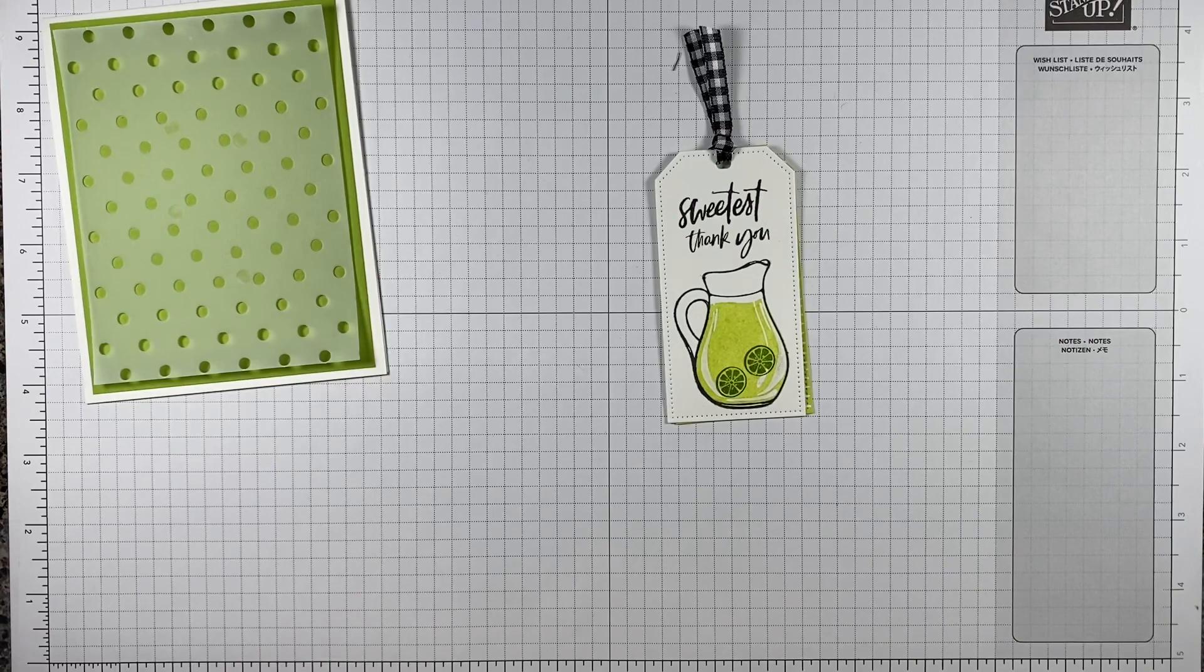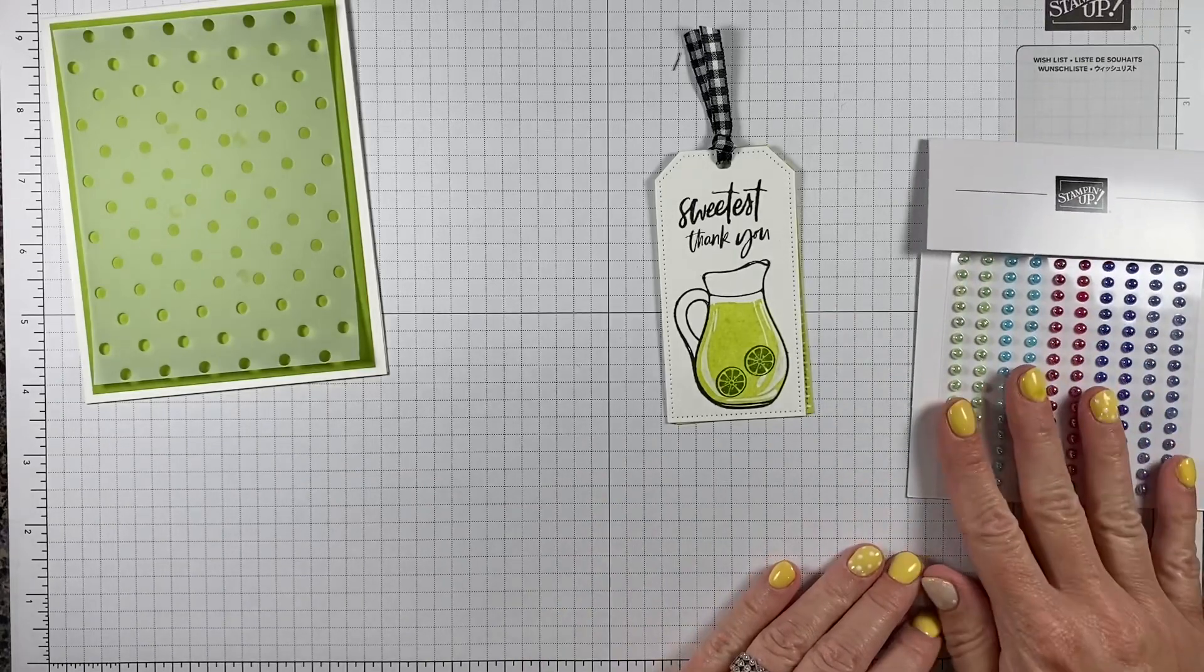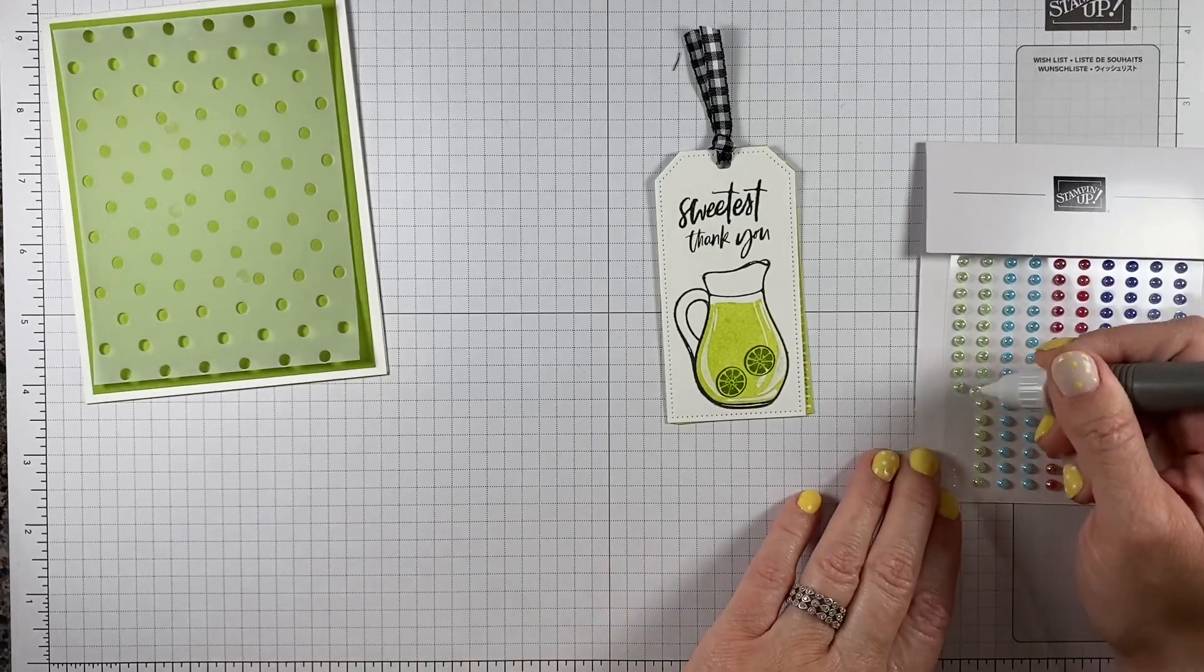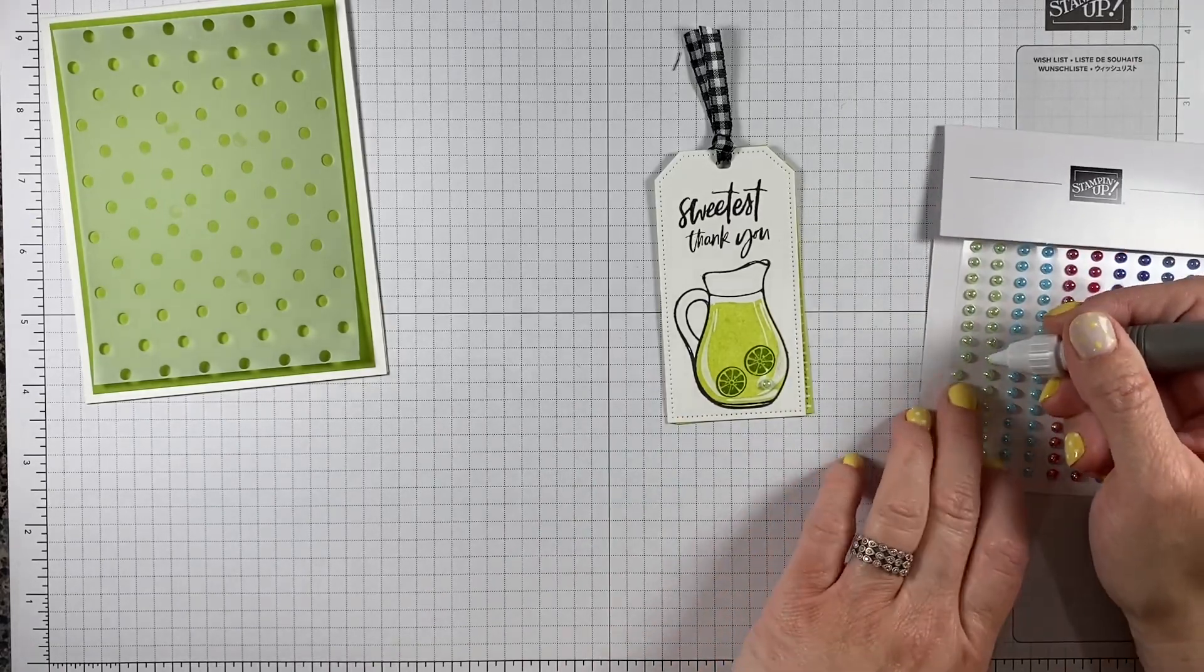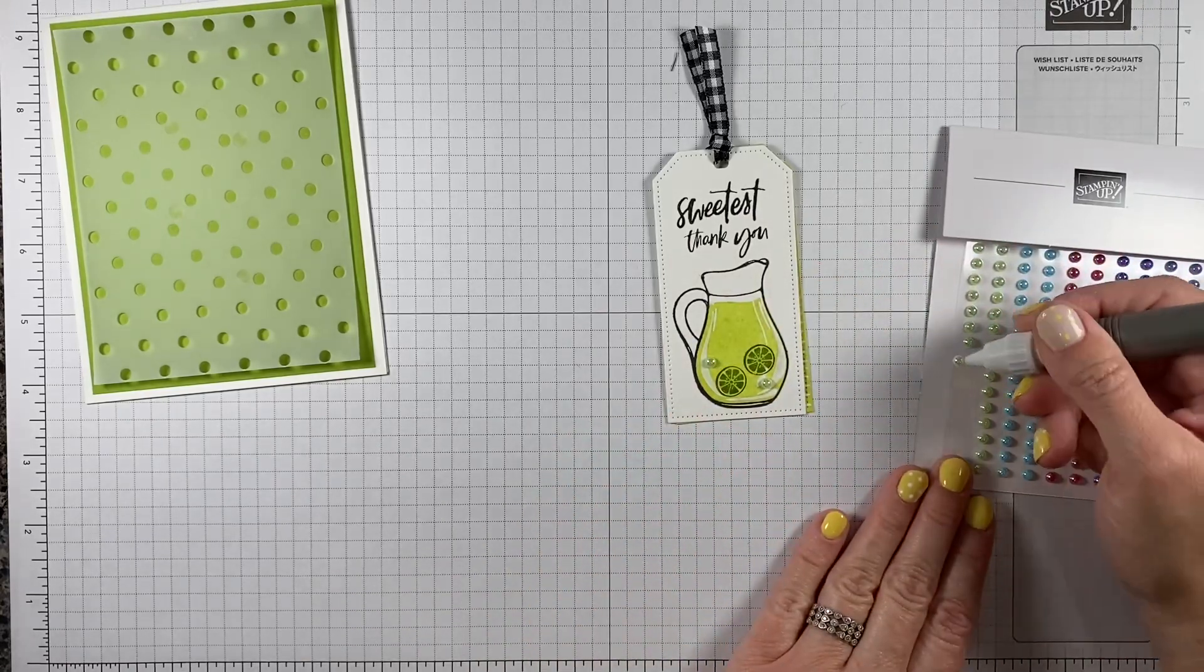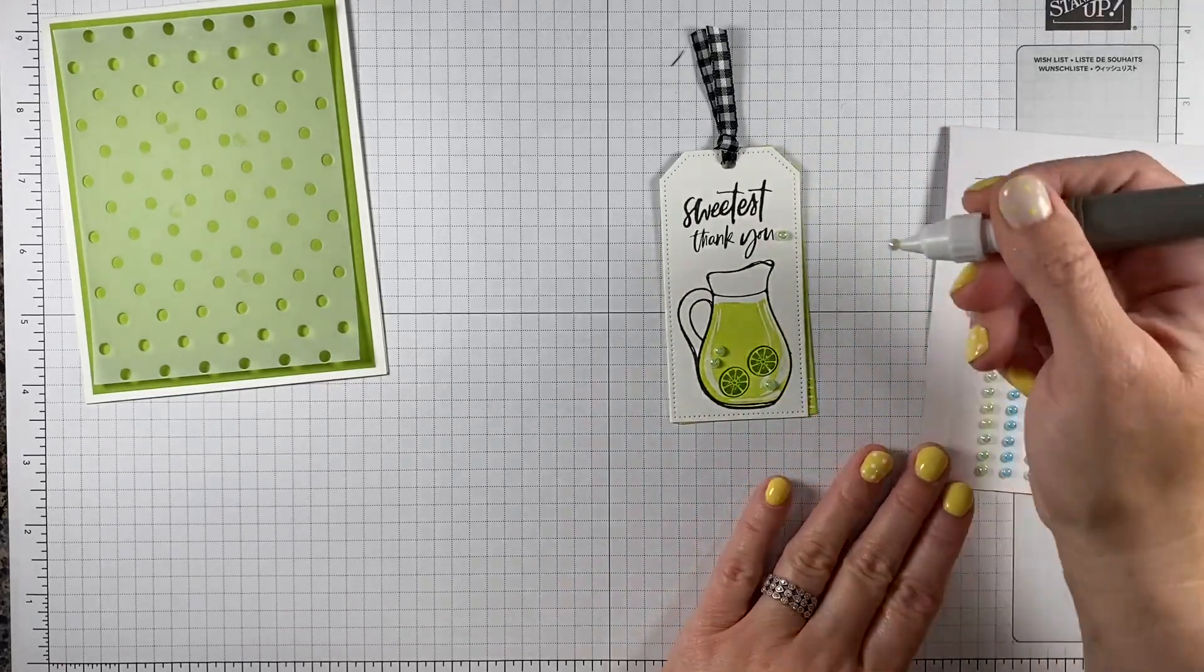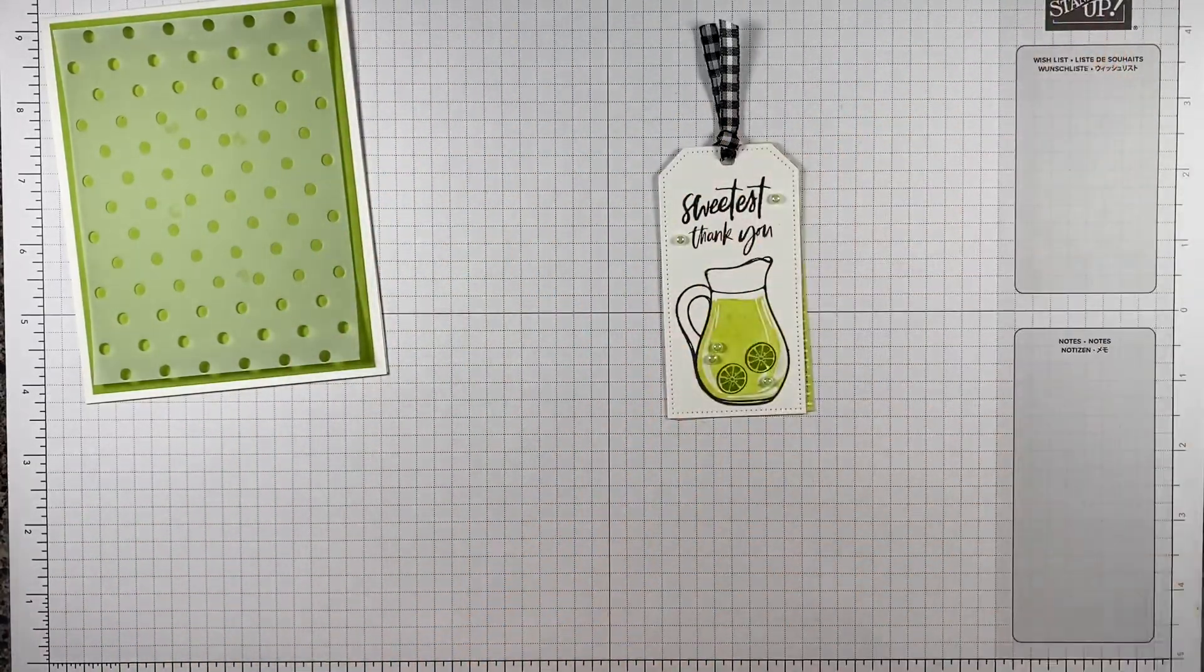I'm also going to add a few little gems. So this is the In-Color gem pack, the 2022-2024 In-Color pearls. These are technically Parakeet Party, but it's all just green here. Let me put them here into our picture. So I'm going to add a couple up over here and maybe a couple here by my sentiment as well.